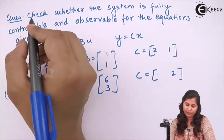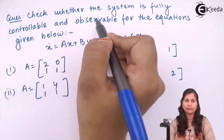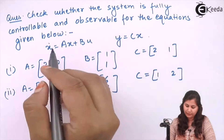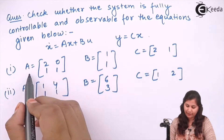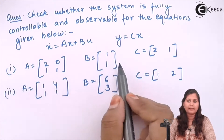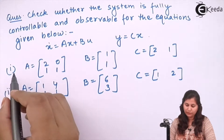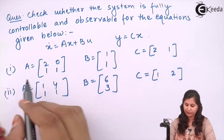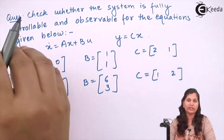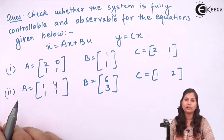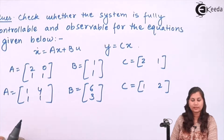Our question is to check whether the system is fully controllable and observable. The state space equations and the value of A, B, C matrices are given to us. There are two parts, so first we will solve for the first part. We will check for these values of A, B, C whether the system is controllable or observable or not.